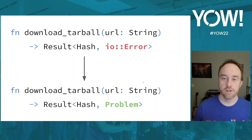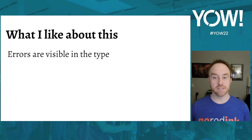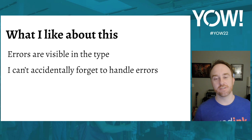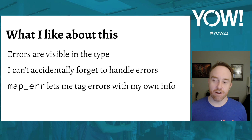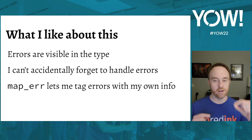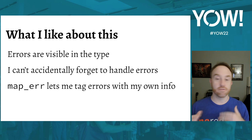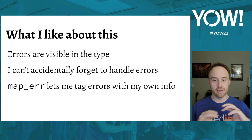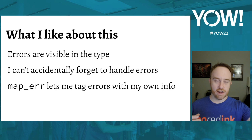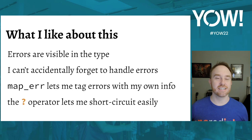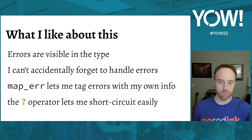What I like about Rust's system: errors are always visible in the type, so you can see at a glance how any operation can fail. You can't accidentally forget to handle errors. map_error also lets you tag errors with custom information — for example, distinguishing between multiple HTTP errors to show different messages to the user. The question mark operator makes short-circuiting very concise.